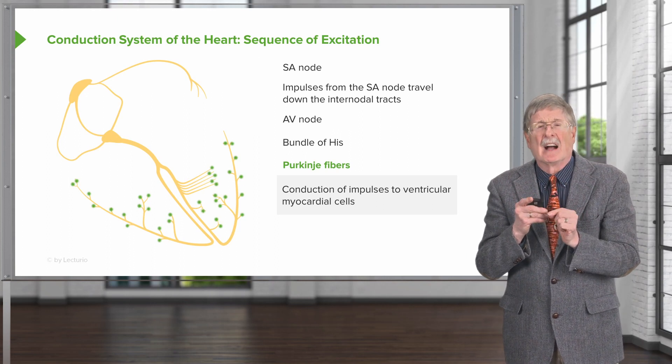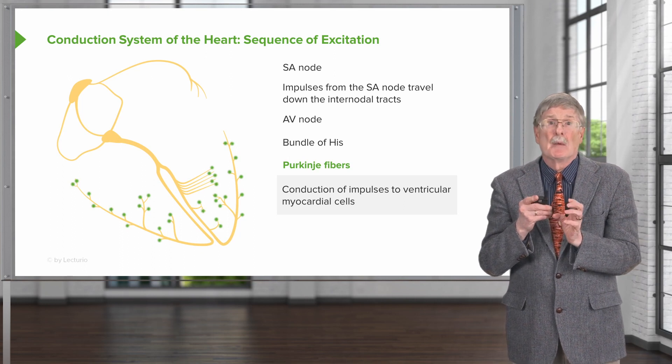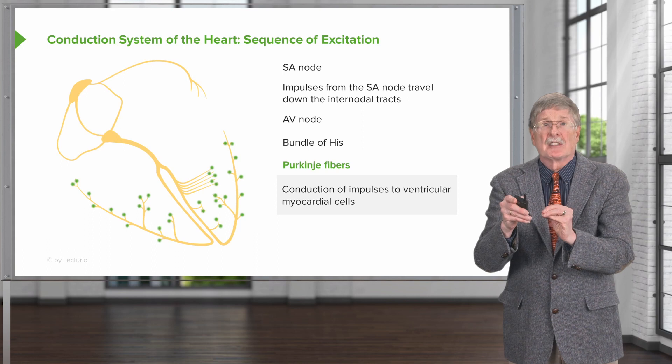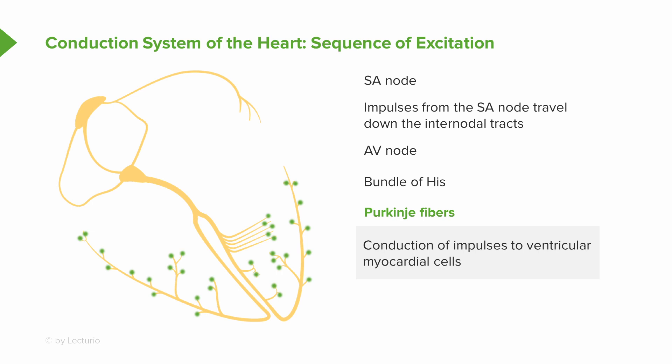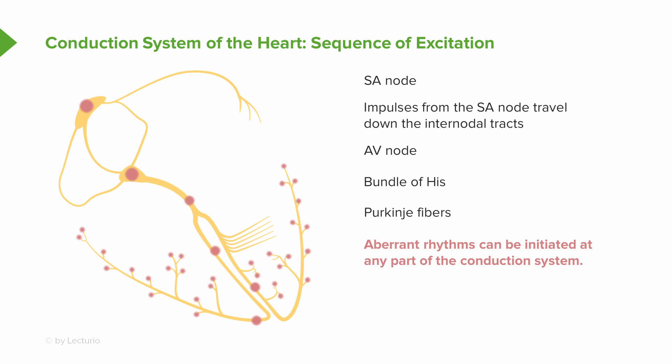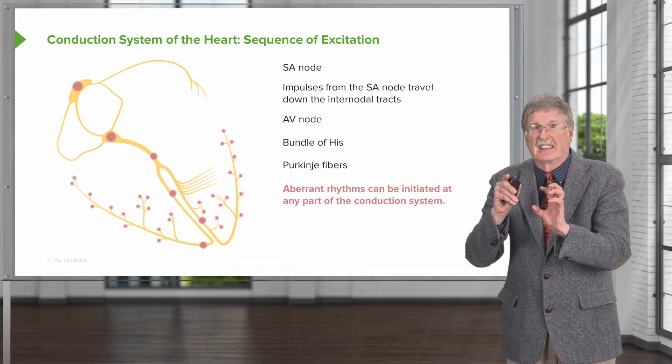The Purkinje fibers are recognizable cell types at the interface between the right and left bundle branches and the individual cardiac myocytes. We then spread that impulse cell to cell to cell, giving us ventricular contraction in a nice wave. Aberrant rhythms — arrhythmias — can be initiated at any part of the conduction system: the sinoatrial node, atrioventricular node, internodal conductions, bundle of His, right and left bundle branch, the Purkinje fibers, or even individual cardiac myocytes. We'll talk about each of those because they have slightly different manifestations.